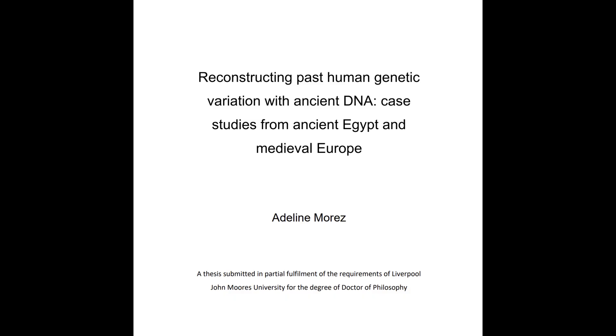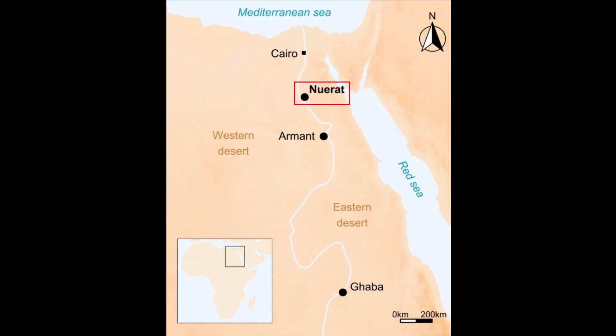Now to begin the analysis, the study featuring the Neurad sample was titled 'Reconstructing Past Human Genetic Variation with Ancient DNA: Case Studies from Ancient Egypt and Medieval Europe.' This study was submitted as a PhD thesis by Adeline Moraes, who is studying at the University of Liverpool. Here is the map where you can see that Neurad is located in Central Egypt and it was one of the most prominent burial grounds for the Old Kingdom elites, making it integral to understanding the genetic makeup of the earliest elites of Egyptian history.